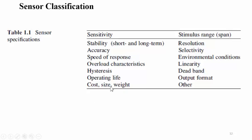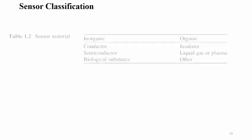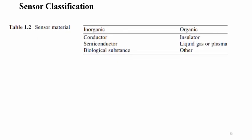Additional specification parameters include manufacturing cost, consumer or customer-oriented cost, dimensions of the sensor such as height and width, weight, stimulus range resolution, sensitivity, selectivity depending on the application or domain, environmental conditions — for example in a foundry industry where high temperature is observed, the selection of the sensor is most important — linearity, dead band, output format, and other parameters.